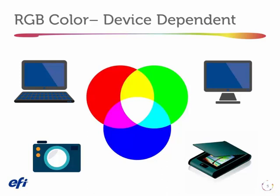RGB color, by definition, is what we call device dependent. We'll talk more about that in a moment. The nature of the RGB color model is that the colors red and green and blue add up together to form white. So sometimes this is called the additive color model.